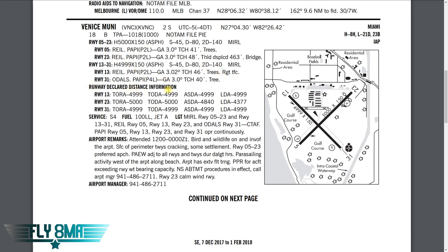Next is runway declared distance information. TORA is your takeoff run available — the length of runway declared available and suitable for the ground run of an airplane takeoff. Unsuitable areas might include gravel, grass, or marked no-go overrun areas. So you have 4,099 feet available on runway 13 for your takeoff run. TODA, takeoff distance available, is the takeoff run available plus the length of any clearway if provided. For your 172 and light aircraft, you're mainly concerned with takeoff run available; TODA is more relevant for jets using overrun calculations.